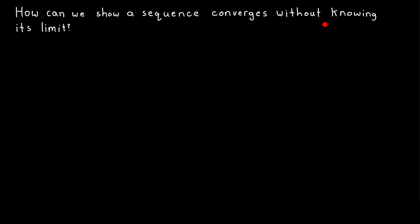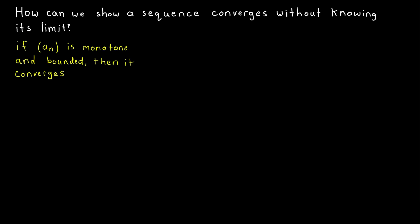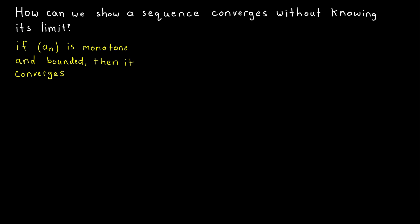So when we don't have an idea what the limit of a sequence might be, our options to show that it converges are pretty limited. One thing that we proved is the monotone convergence theorem, and that can help us out in this sort of situation. Using that theorem, we know that if a sequence is monotone and bounded, then it converges. We don't have to identify what the limit is to use the monotone convergence theorem. But, of course, not every sequence is monotone, so the monotone convergence theorem isn't always going to be able to help us.